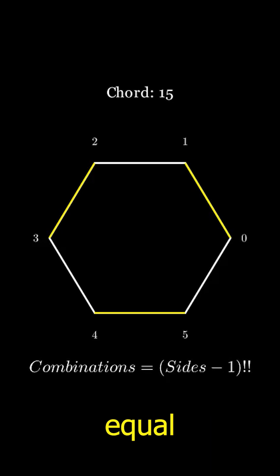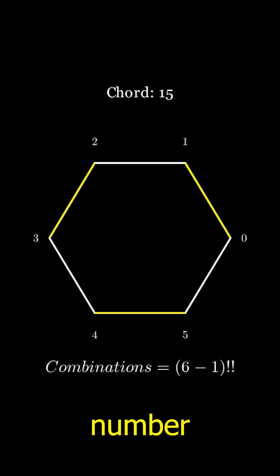The number of combinations equals the number of sides minus 1, double factorial. So we plug in 6 for the number of sides, subtract 1, and get 5.